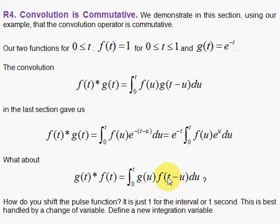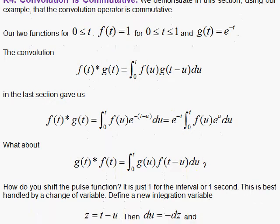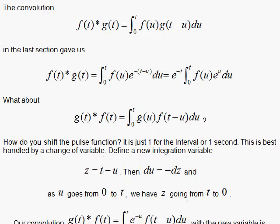Now, I have a slight problem here because I don't see any u's in the f function, so I don't know how to shift this thing. So we're going to instead use a change of variables, and that's how we're going to get around it.